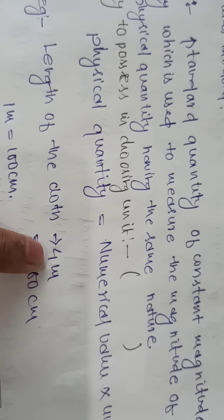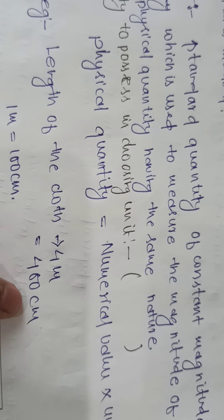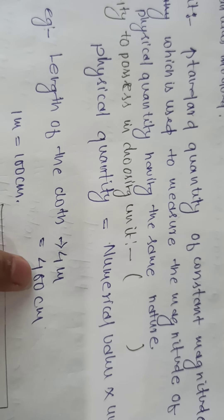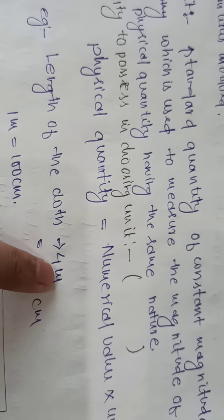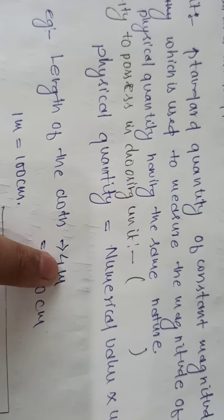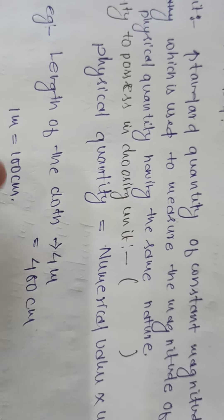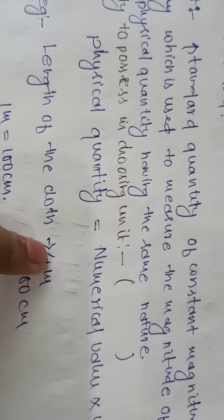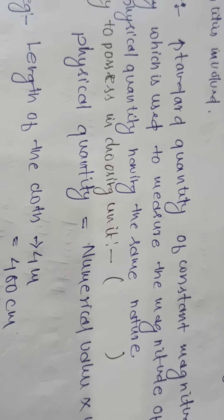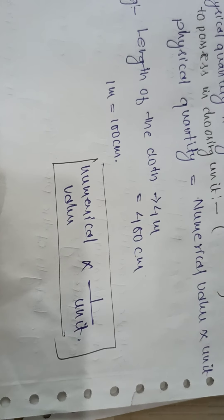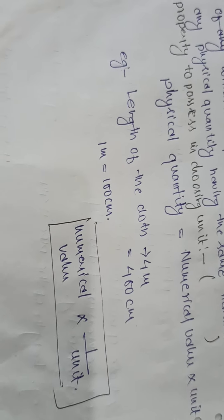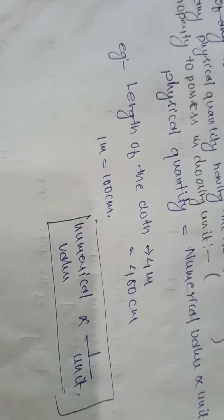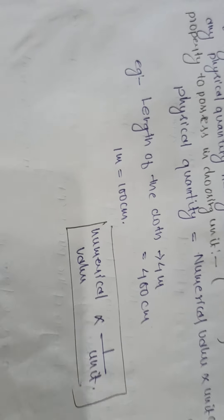When converting 4 meters into centimeters, it becomes 400 centimeters. Here, meter is a bigger unit and centimeter is a smaller unit — 1 meter equals 100 centimeters. When you change the unit from bigger to smaller, the numerical value changes from smaller to bigger. From this we get the relationship: numerical value is inversely proportional to the unit. So numerical value and unit are not directly proportional — they are inversely proportional.